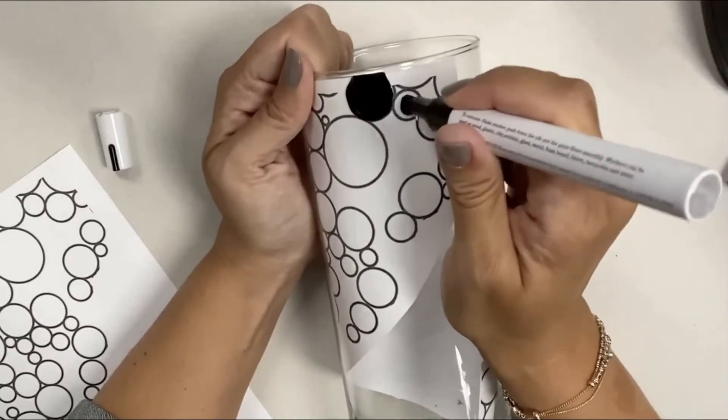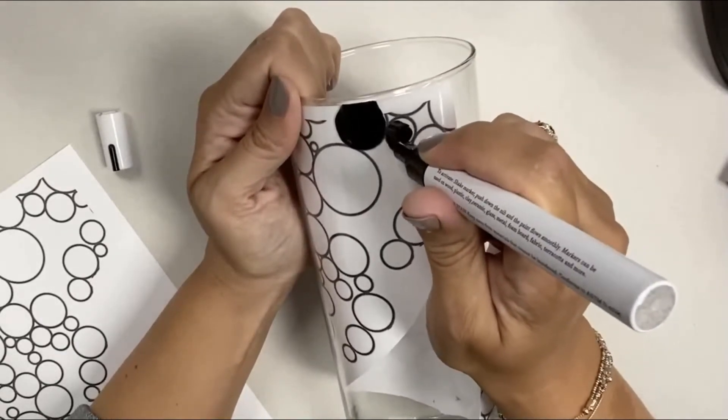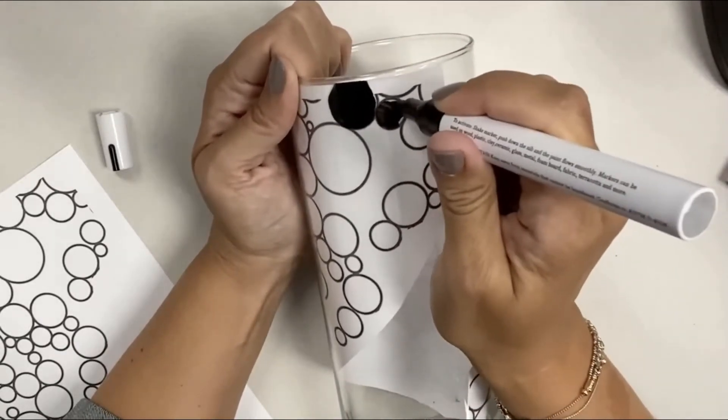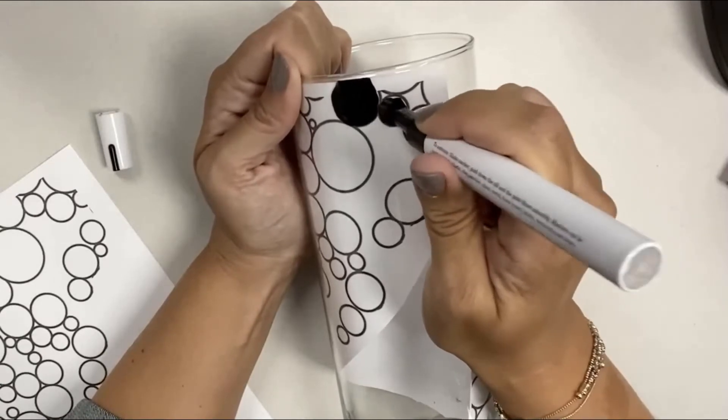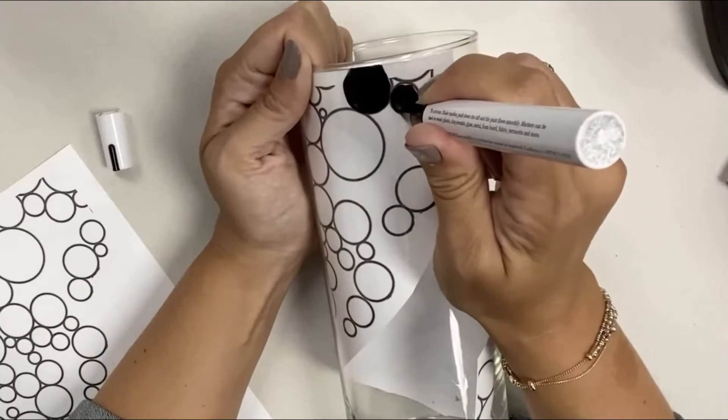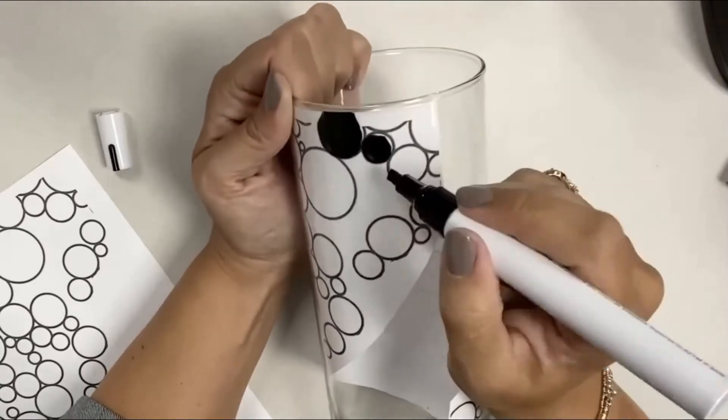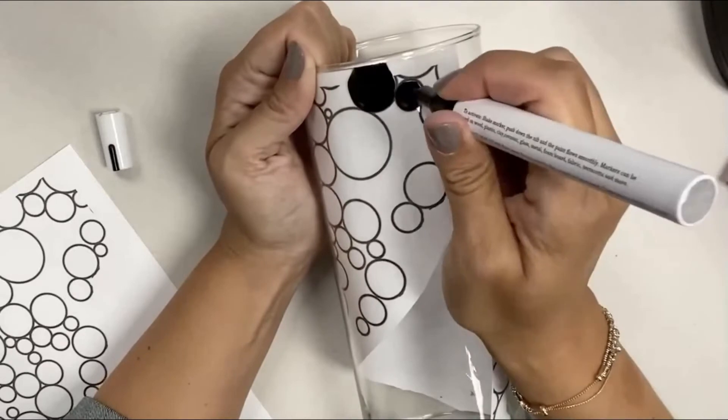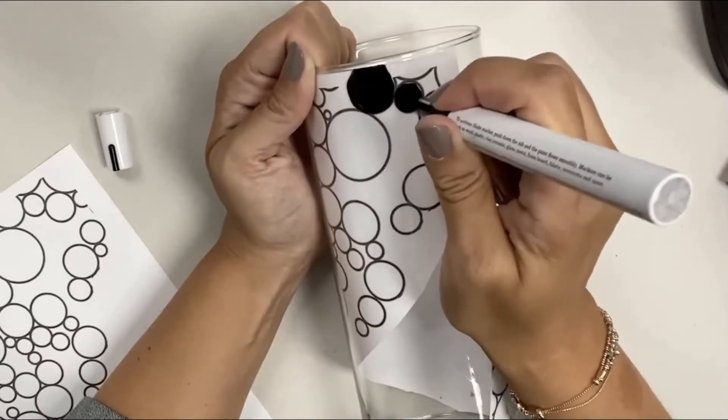And you want to be mindful of where your hand is at all times, both of your hands. Just keep that in mind when you're touching your vase or if you're doing like a picture frame or something. You don't want to smear off your work, especially not before it has dried.